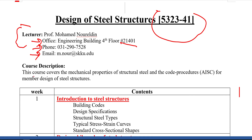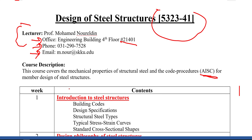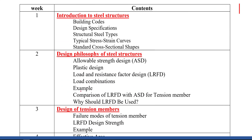This course covers the mechanical properties of structural steel and code procedures based on AISC — the American Institute for Steel Construction — for member design of steel structures. We are going to discuss different topics which are important for anyone who is going to design steel structures.